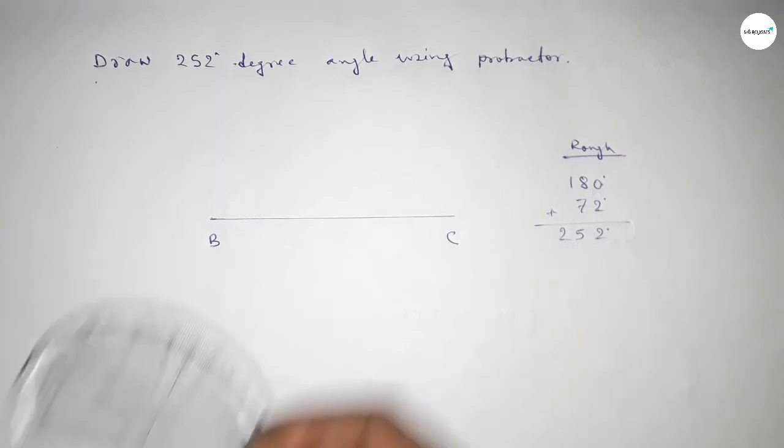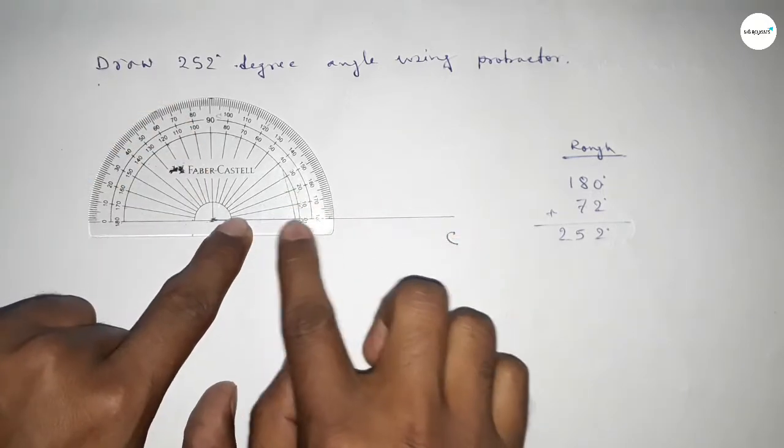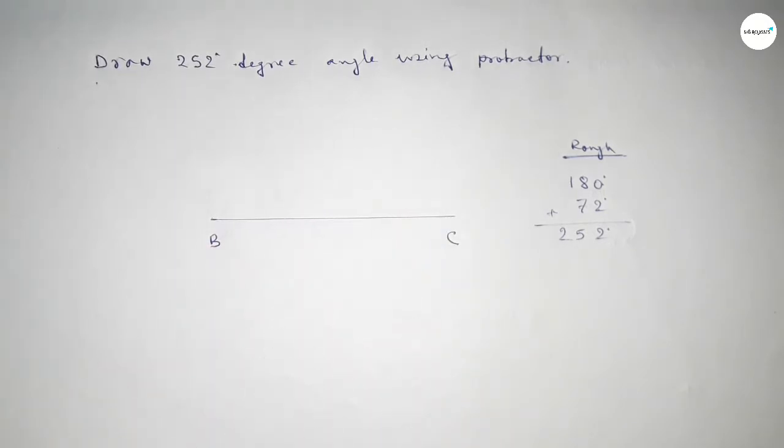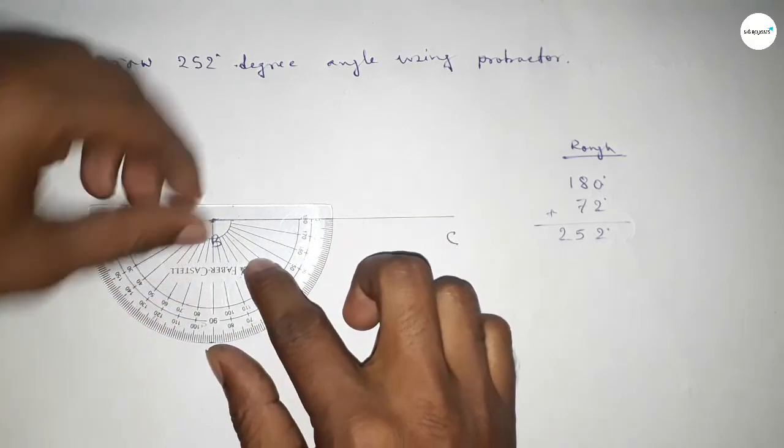Putting the protractor on point B and counting 180 degree angle, so this is 180 degree. Plus, putting the protractor on point B and counting 72 degree angle.